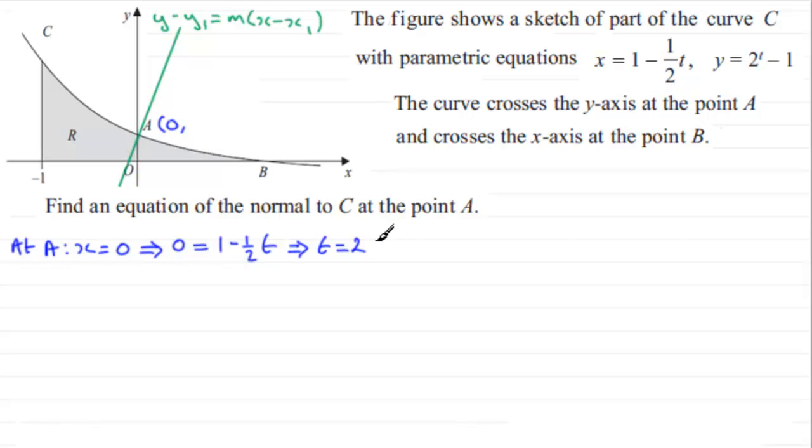We get the corresponding y value now just by substituting t equals 2 into here. 2 to the power 2 is 4 minus 1 is 3. So it follows then that y equals 3, so our coordinate is (0, 3).